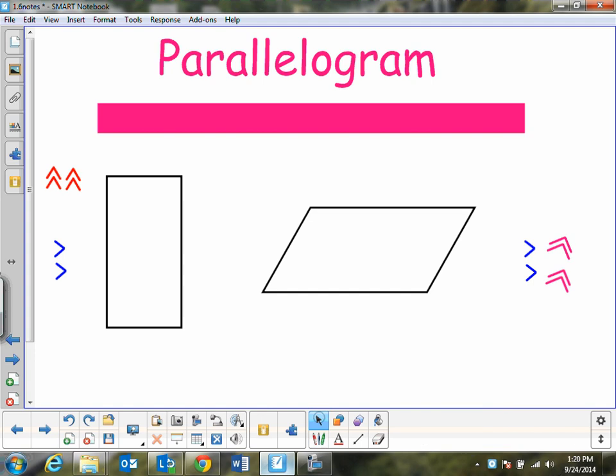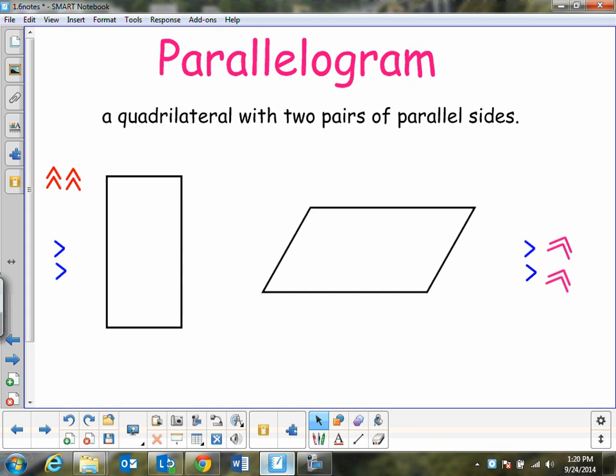This one is a parallelogram. This one has two pairs of parallel sides. And then, of course, they must be opposite of each other. So we've got two different examples here.